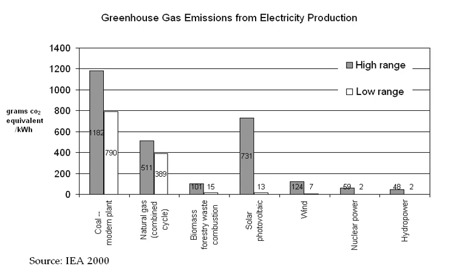As part of its strategy, California implemented a 'loading order' for new energy resources that puts energy efficiency first, renewable electricity supplies second, and new fossil-fired power plants last. Energy conservation is broader than energy efficiency in that it encompasses using less energy to achieve a lesser energy-demanding service — for example through behavioral change. Examples of conservation without efficiency improvements would be heating a room less in winter, driving less, or working in a less brightly lit room. Reducing energy use is seen as a key solution to reducing greenhouse gas emissions. According to the International Energy Agency, improved energy efficiency in buildings, industrial processes, and transportation could reduce the world's energy needs in 2050 by one-third.